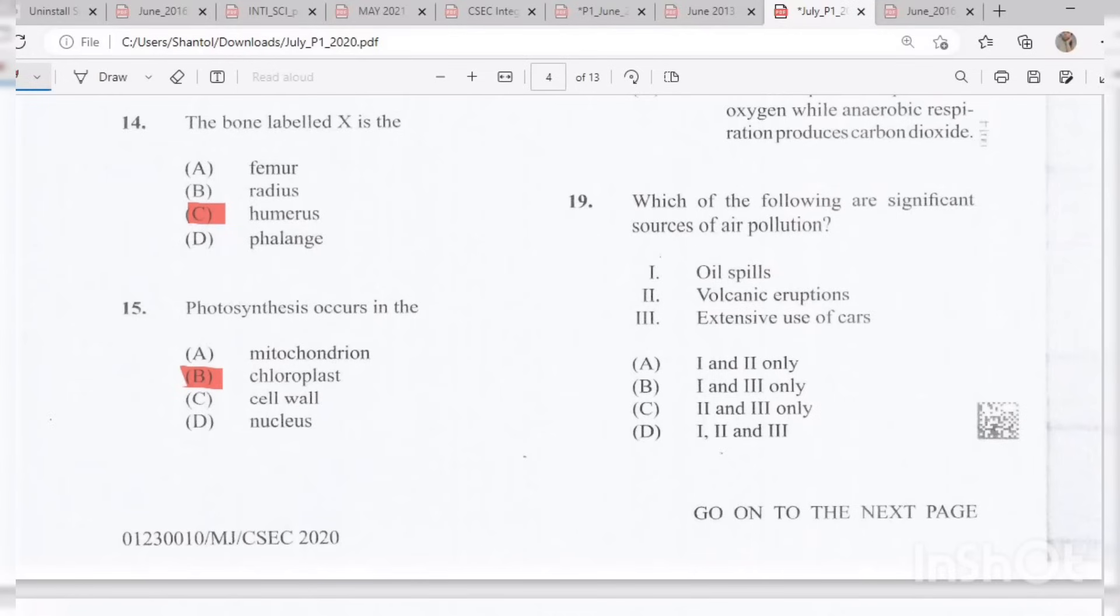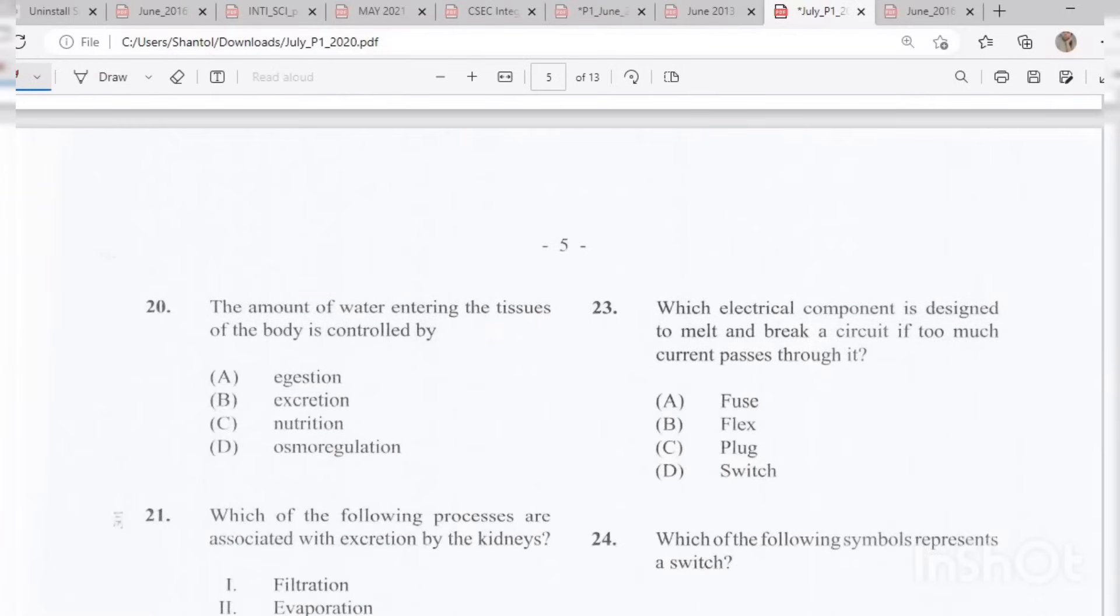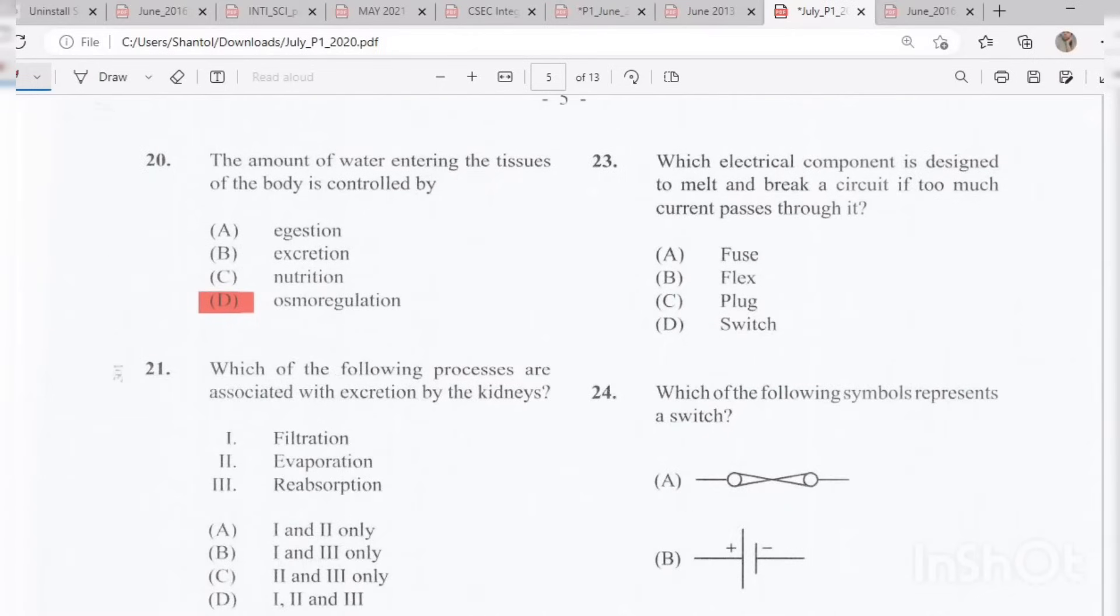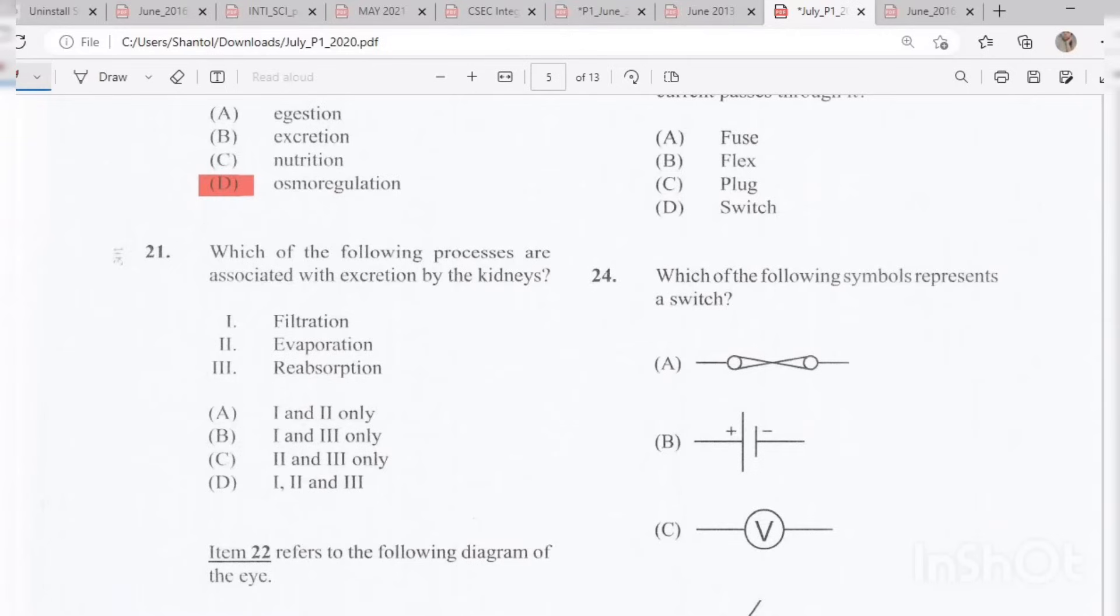Number 19: Which of the following are significant sources of air pollution? Oil spills, volcanic eruptions and extensive use of cars. The answer is C, volcanic eruptions and extensive use of cars. Number 20: The amount of water entering the tissues of the body is controlled by D, osmoregulation. Number 21: Which of the following processes are associated with excretion by the kidneys? The answer is B, filtration and reabsorption.